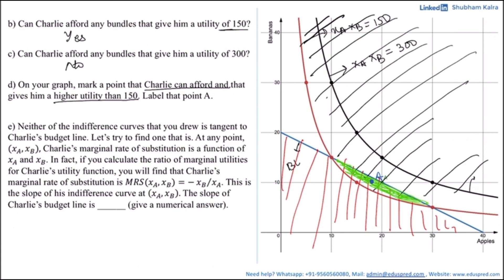The next part says neither of the indifference curves drawn is tangent to Charlie's budget line — let's find the one that is. At any point (xa, xb), Charlie's marginal rate of substitution is a function of xa and xb. If you calculate the ratio of marginal utilities for Charlie's utility function, you will find that Charlie's MRS, which is the function of (xa, xb), is equal to minus xb divided by xa. This is the slope of his indifference curve at (xa, xb).